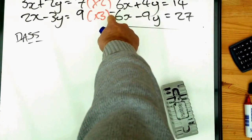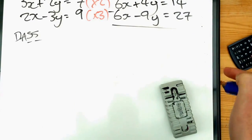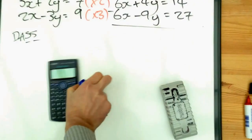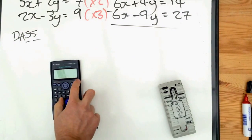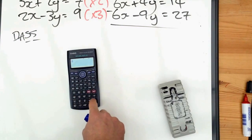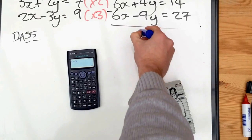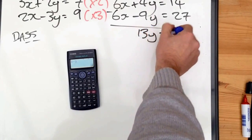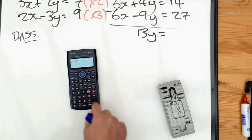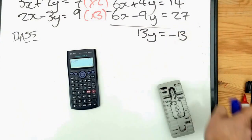Four y minus minus nine y. Now, minus minus makes plus, so four y plus nine y is thirteen y. I know a lot of you struggle a little bit with directed numbers, so you can just stick it in your calculator: four minus minus nine equals thirteen. So thirteen y is equal to fourteen minus twenty-seven. Again, if you're struggling, stick the numbers in there and you get minus thirteen.